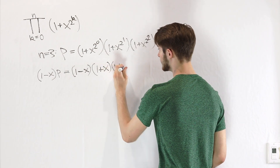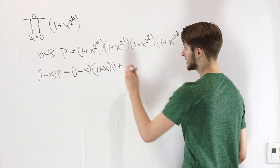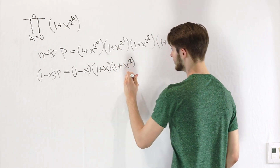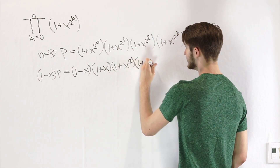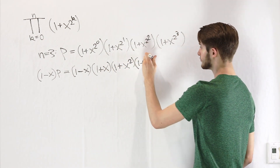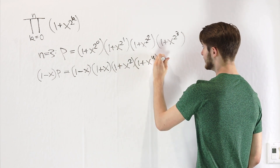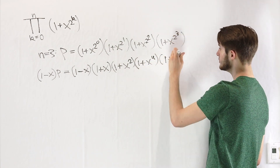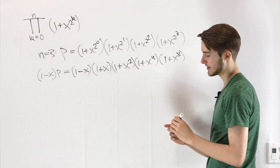After that, we have 1 plus x — 2 to the first power is 2, so we'll have x squared. Then 2 squared is 4, so we have x to the fourth power. And 2 cubed is 8, so we have x to the eighth power.